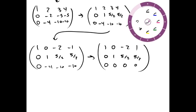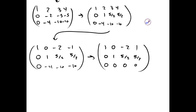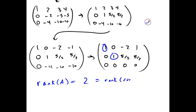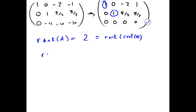Now we have the reduced row echelon form. Since there are two leading ones, the rank of A equals 2, because the rank of the reduced row echelon form of A also equals 2. And since the rank of A equals the dimension of the image of A, the dimension of the image of A is 2.